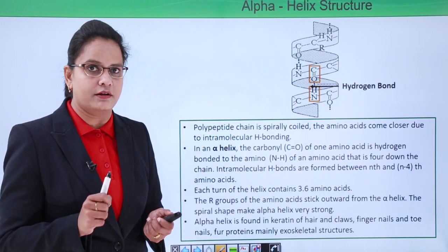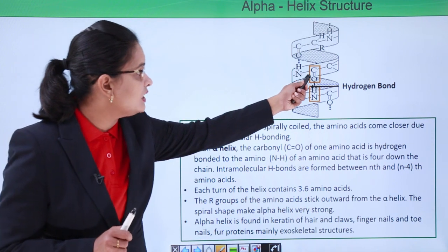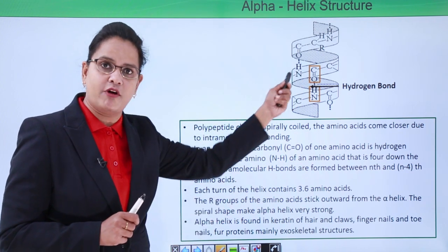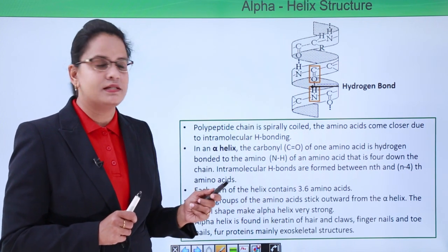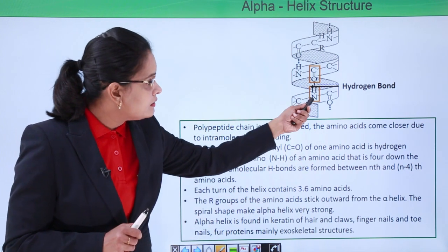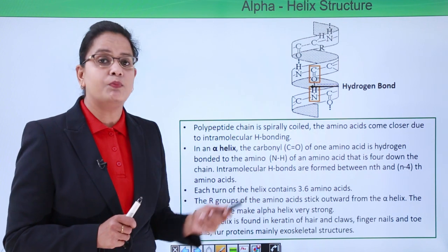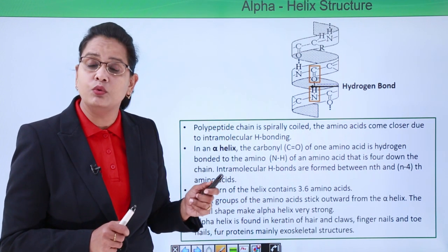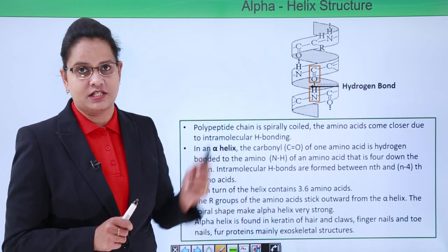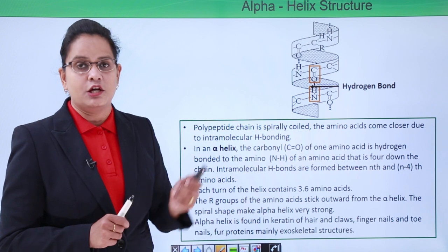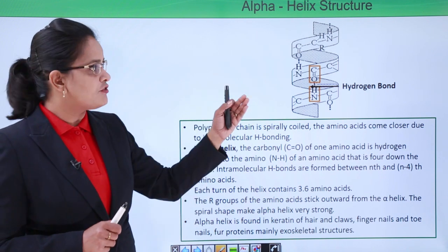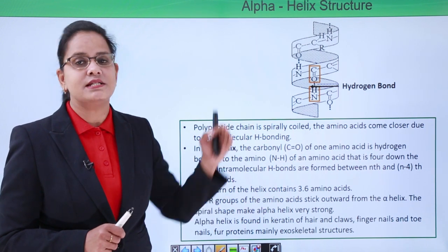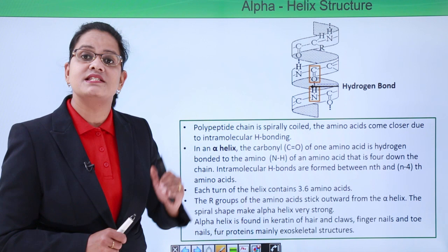This intramolecular hydrogen bonding occurs between the carbonyl group of one amino acid and the amide group of another amino acid which is four positions down the chain. So after every four amino acids there will be a hydrogen bond.